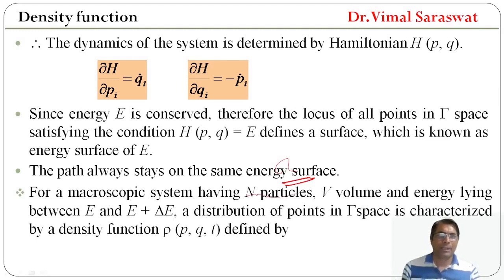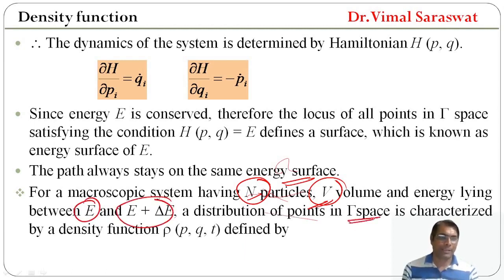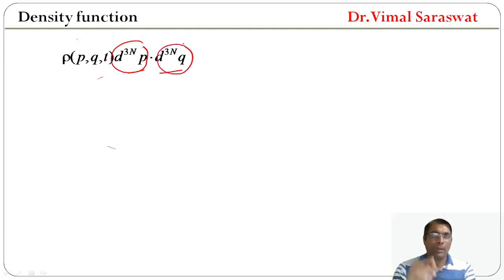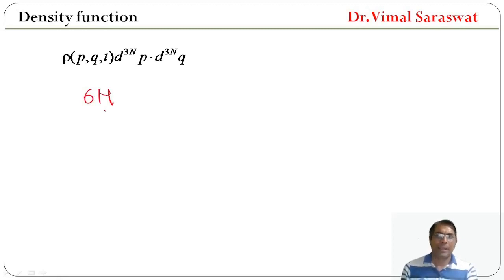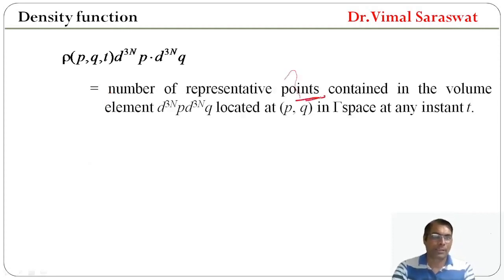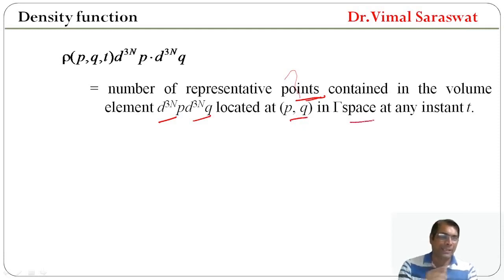For a macroscopic system with N particles and volume V, where energy lies between E and E + ΔE, a distribution of points in gamma space is characterized by a density function ρ, which is a function of p, q, and t. It is defined such that ρ · d³ᴺp · d³ᴺq equals the number of representative points contained in the volume element d³ᴺp d³ᴺq located at (p, q) in gamma space at any instant t.